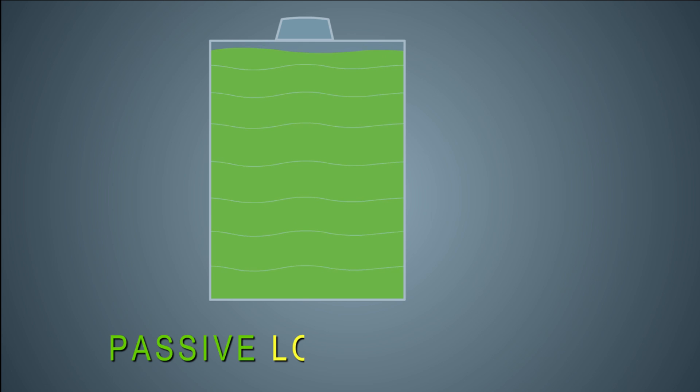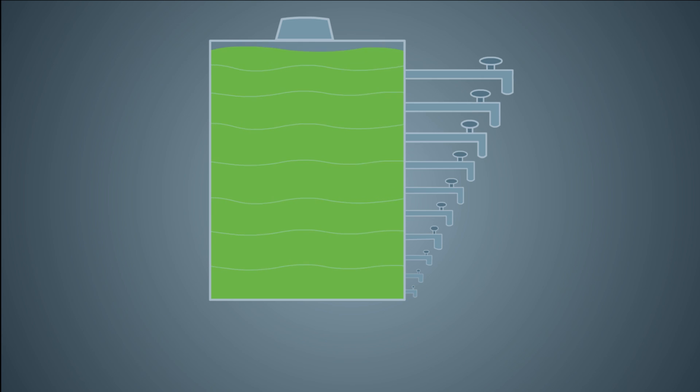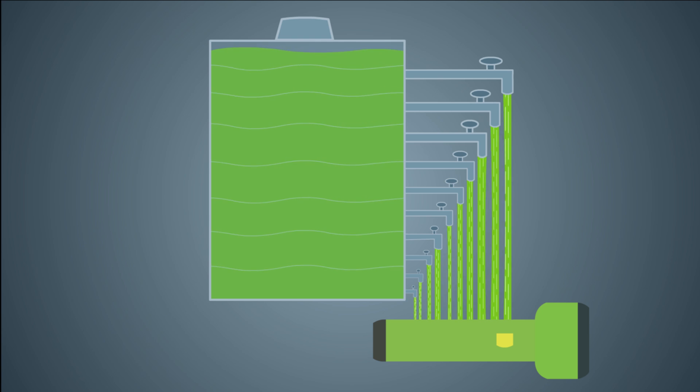The containers for these passive load devices have several faucets draining juice as the device operates. For this example, we have 10 faucets. Imagine the combined juice from these faucets flow into a passive load device, such as a flashlight.